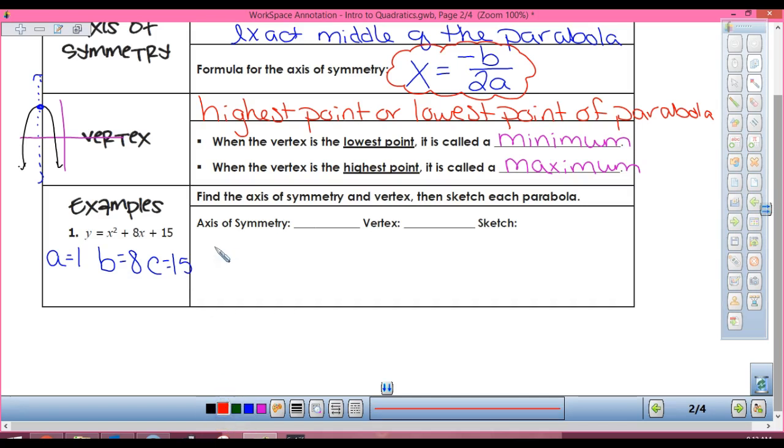Alright, so my axis of symmetry is x equals the opposite of B would be negative 8 divided by 2 times 1. So 8, negative 8 divided by 2? Negative 4. So my axis of symmetry is x equals negative 4. Make sure you have that x equals there.